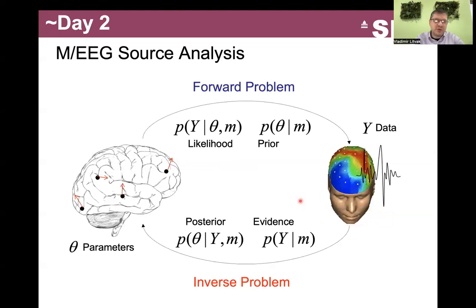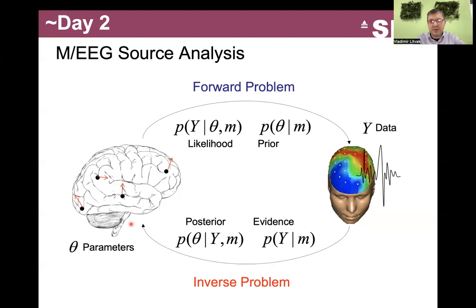Then we will switch gears and talk about Bayesian inference, and particularly two applications of it in SPM. Tomorrow, we will discuss the application of Bayesian inference to the MEG and EEG inverse problem. The general idea is that if you have a forward model that allows you to define exactly how your data is generated, you have a mathematical apparatus to invert this model and go from data to parameters. In source analysis, those parameters are typically cortical current source density — the levels of cortical activity that generated your MEG or EEG results. The images generated with Bayesian source analysis can then be fed into the classical GLM-based pipeline.